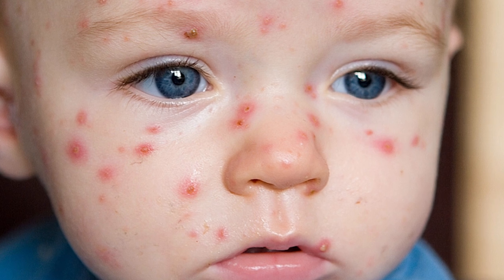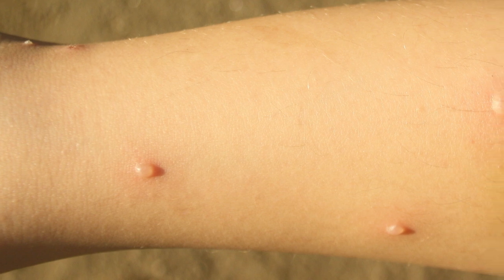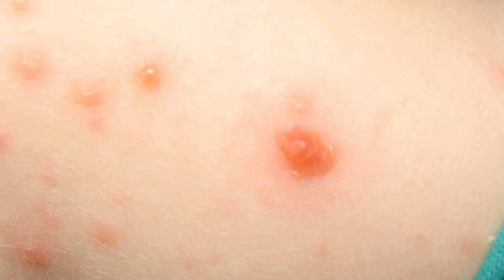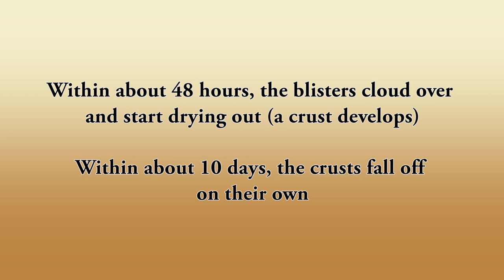The symptoms of chickenpox include an itchy rash whose severity varies considerably. Some patients may have just a few spots, while others are covered all over the body. The spots develop in clusters and generally appear on the face, limbs, chest, and stomach. Initially there are small red spots that itch a lot; they may develop into spots with blisters on top. Within about 48 hours the blisters cloud over and start drying out, and within about 10 days the crust falls off on its own.